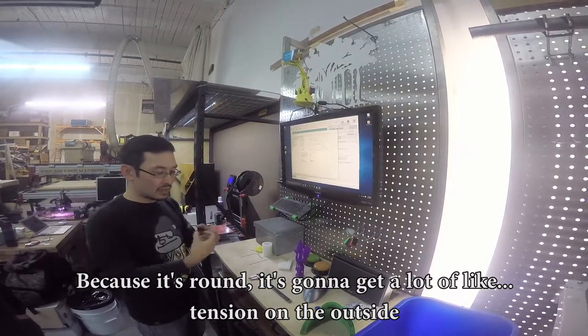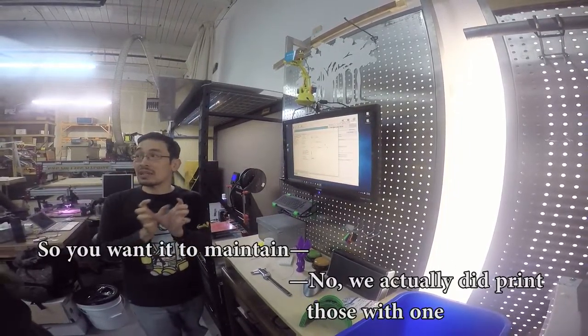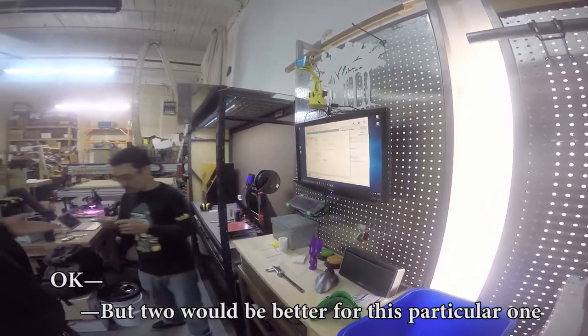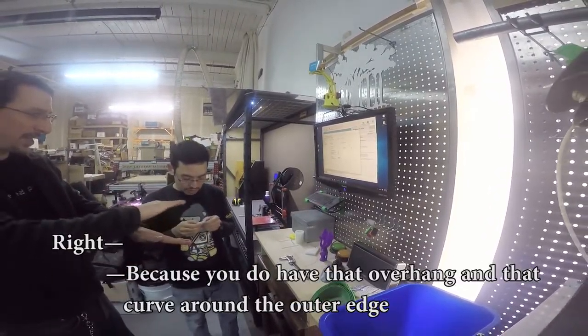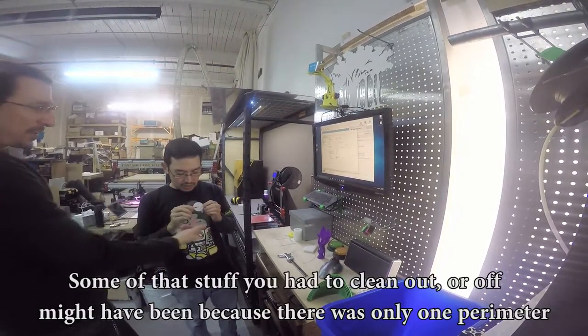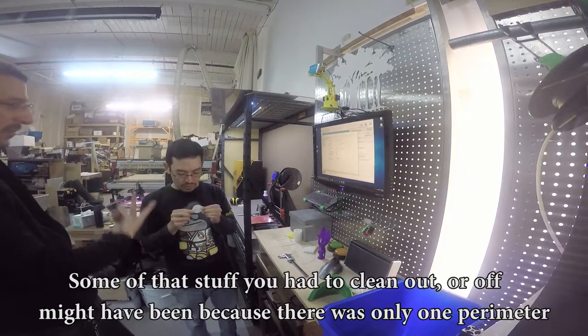It's going to get a lot of tension on the outside, so you want it to maintain... No, we actually did print those with one, but two would be better for this particular one because you do have that overhang and that curve around the outer edge, and that would help you get that curve with less droop. Some of the stuff that you had to clean out might have been because it was only one perimeter.